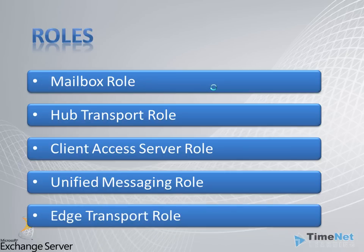The last role is the Edge Transport role, which can be used as extra protection for all the other roles by standing as a standalone server outside our domain environment. This standalone machine receives all incoming emails including spam and viruses. It is enabled with antivirus and anti-spam capabilities, filtering all junk and viruses and allowing only safe mails into our Hub Transport server.